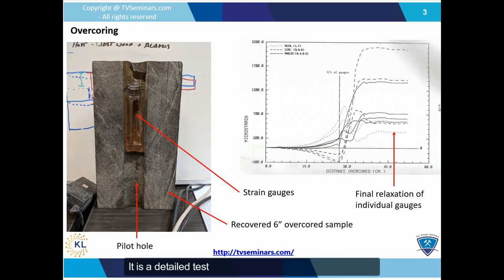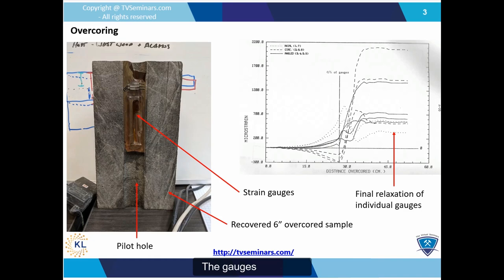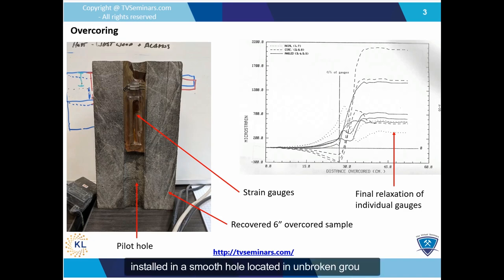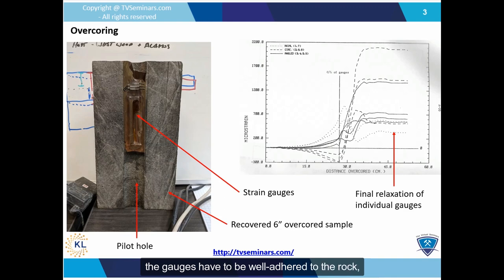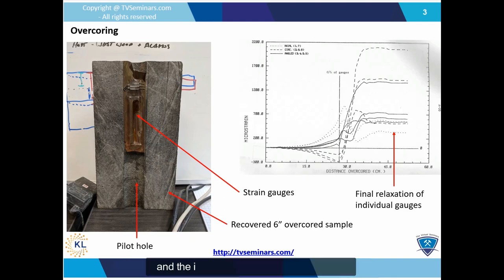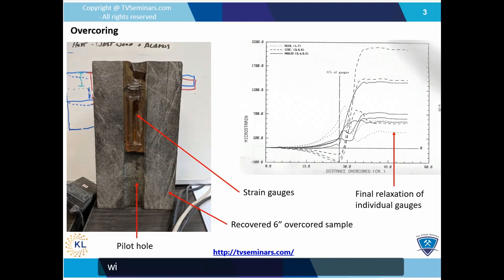It is a detailed test, but one that is difficult to perform well. The gauges should be installed in a smooth hole located in unbroken ground. The gauges have to be well-adhered to the rock, the over-coring must remain aligned with the pilot hole, and the intact sample has to be recovered — which is all easier said than done with a 6-inch diameter piece of rock at the end of a 10-meter hole.